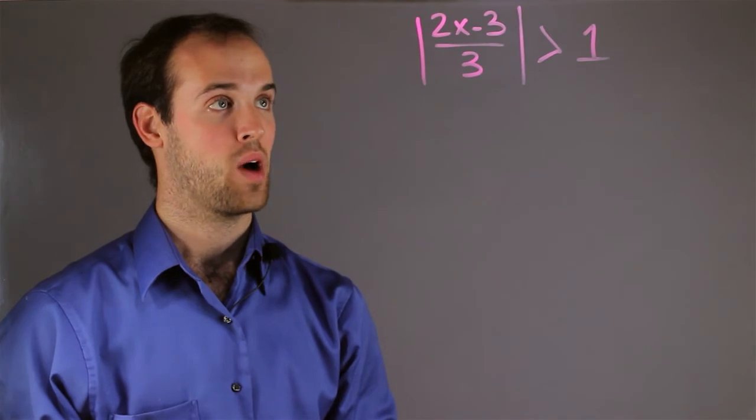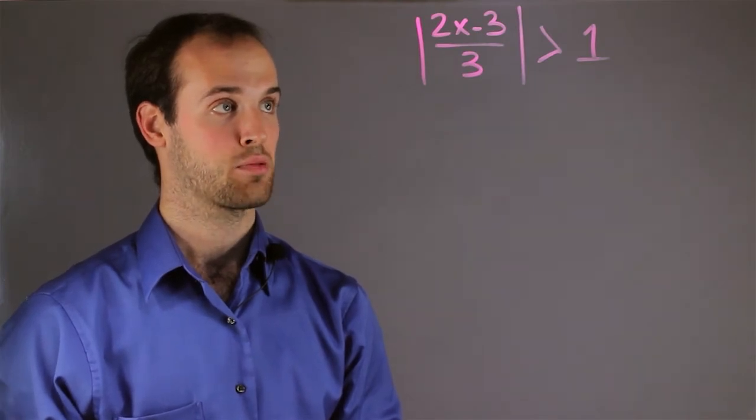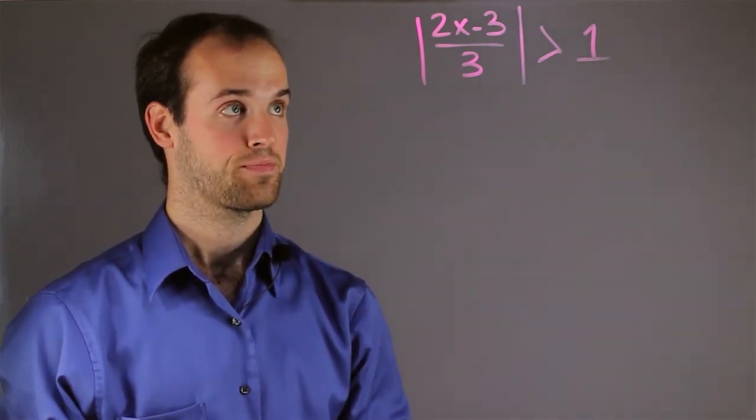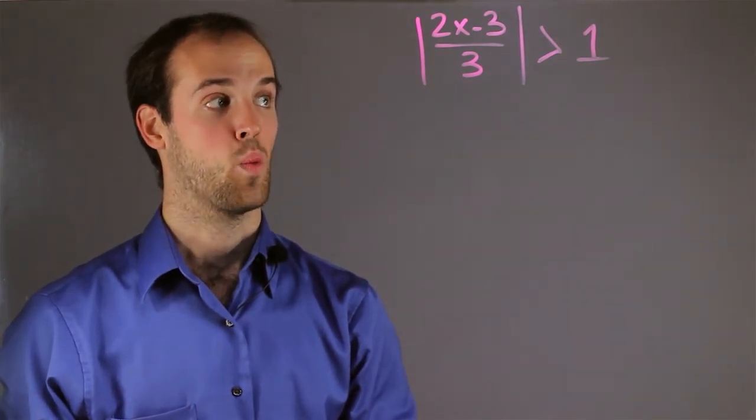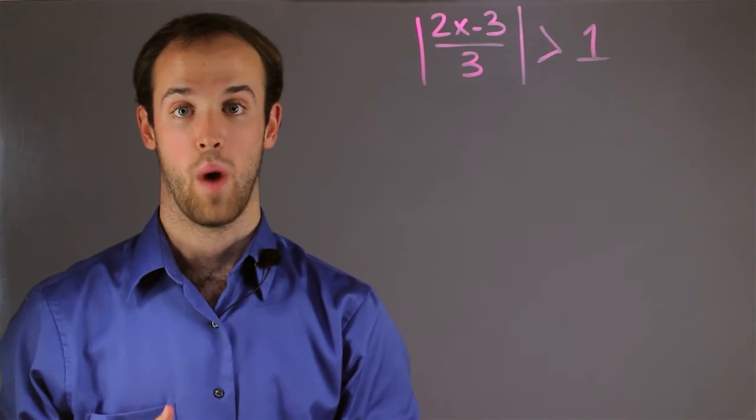We have the absolute value of 2x minus 3 over 3 is greater than 1, which means that the distance has to be more than 1 away from zero.